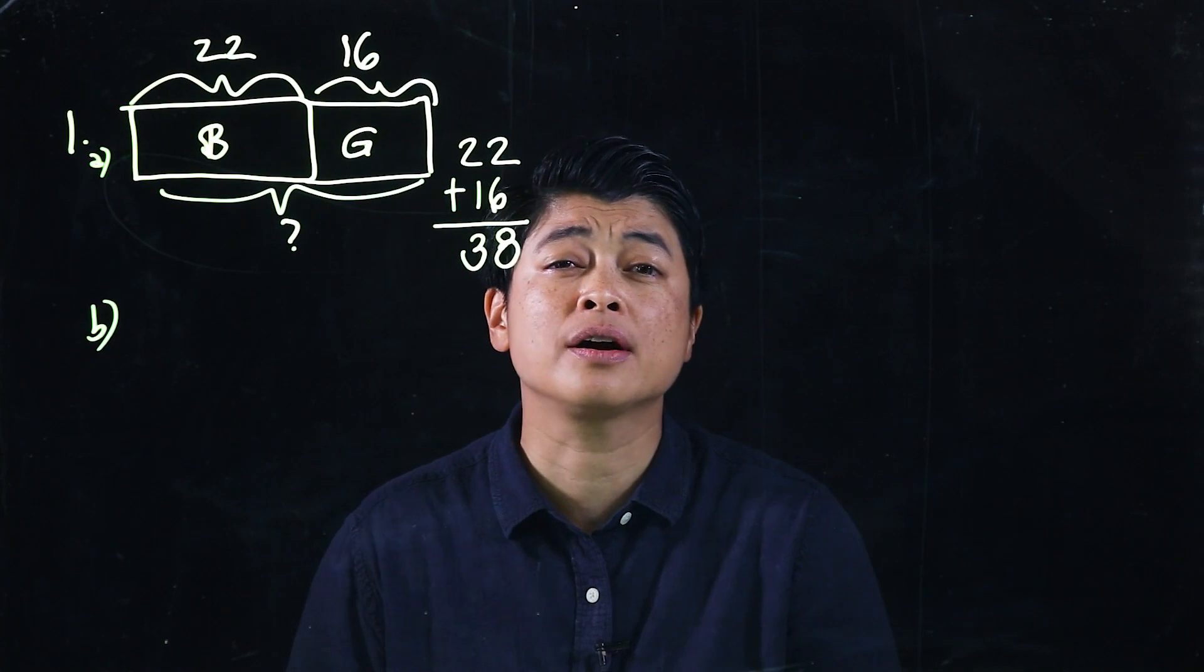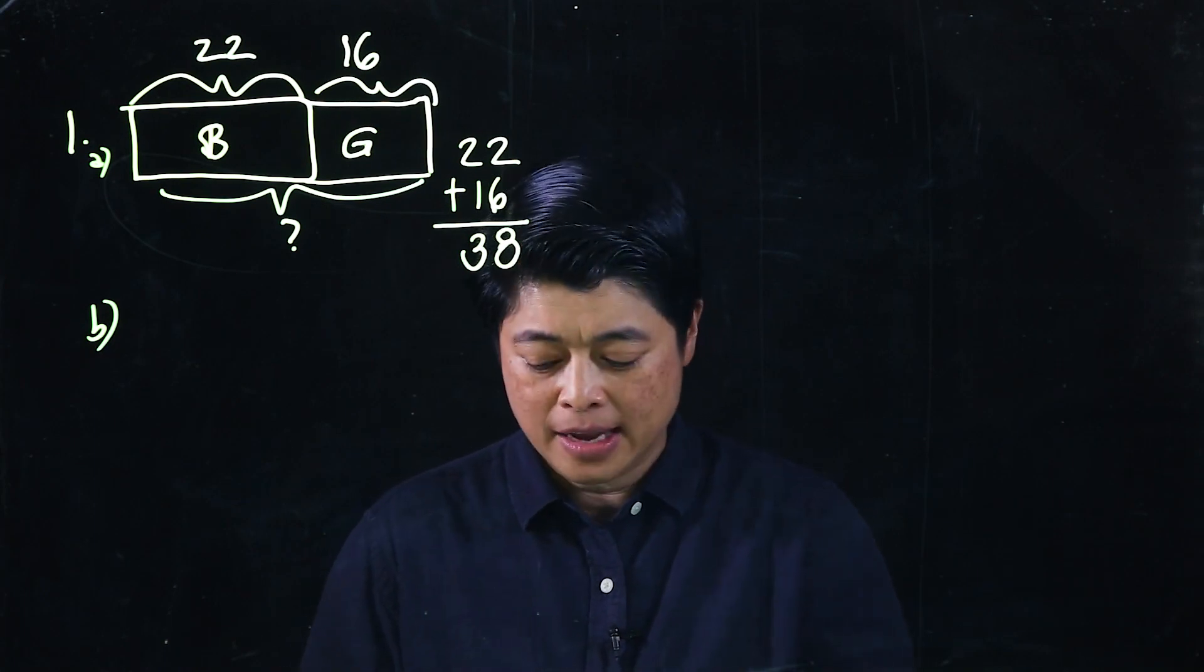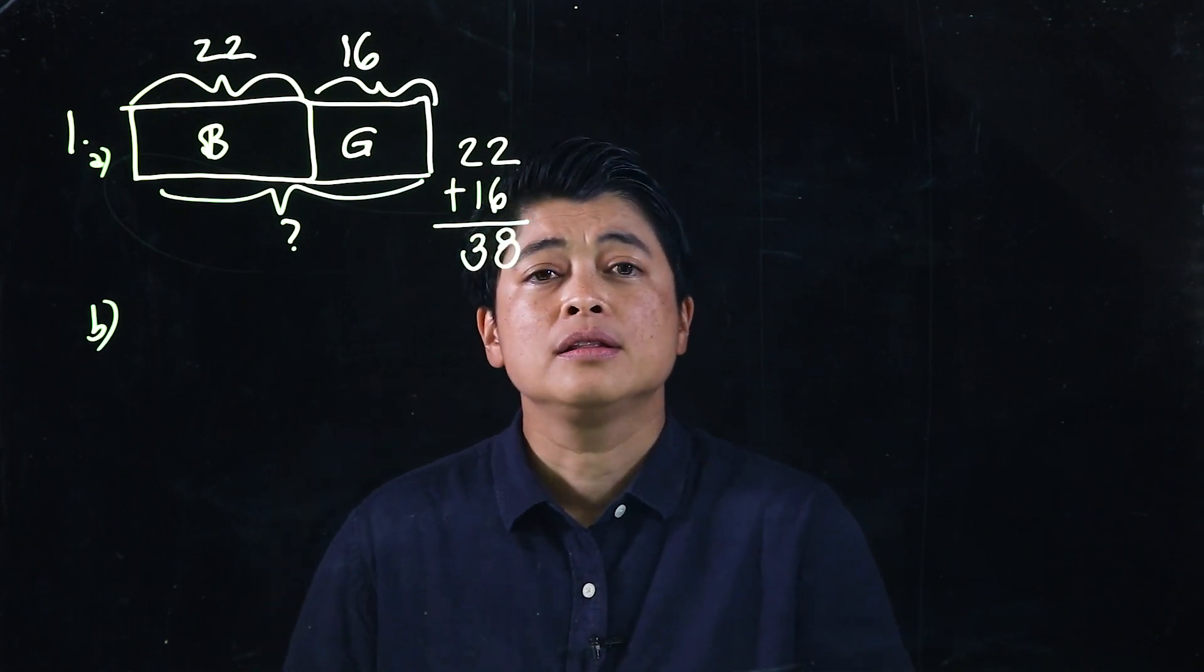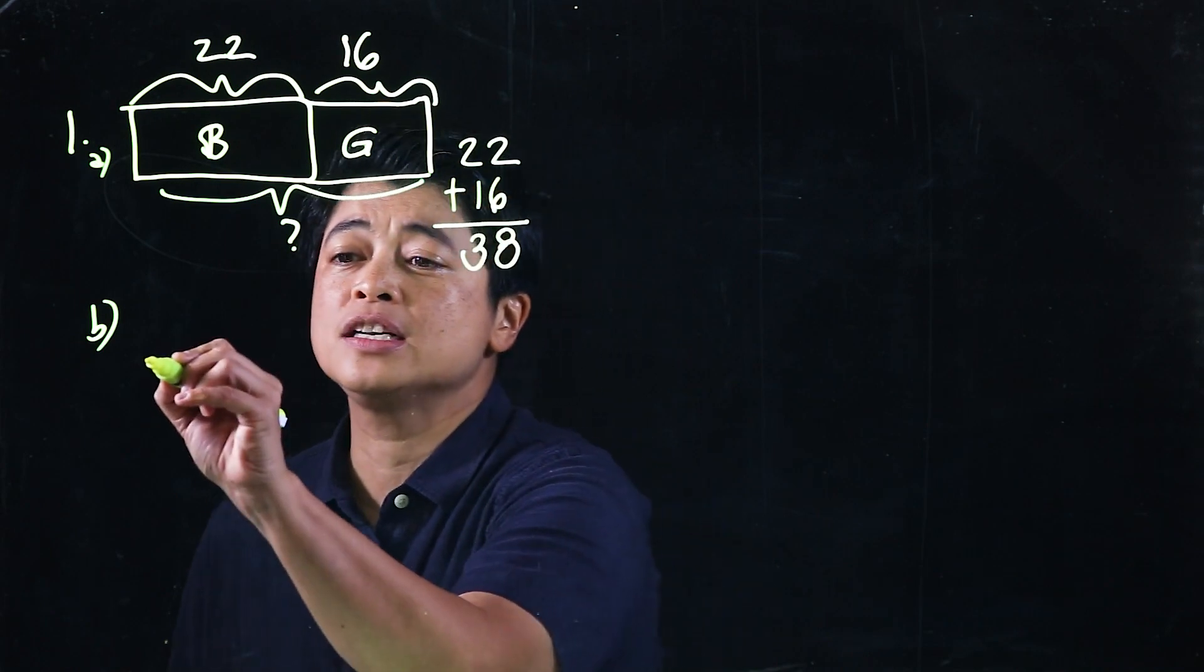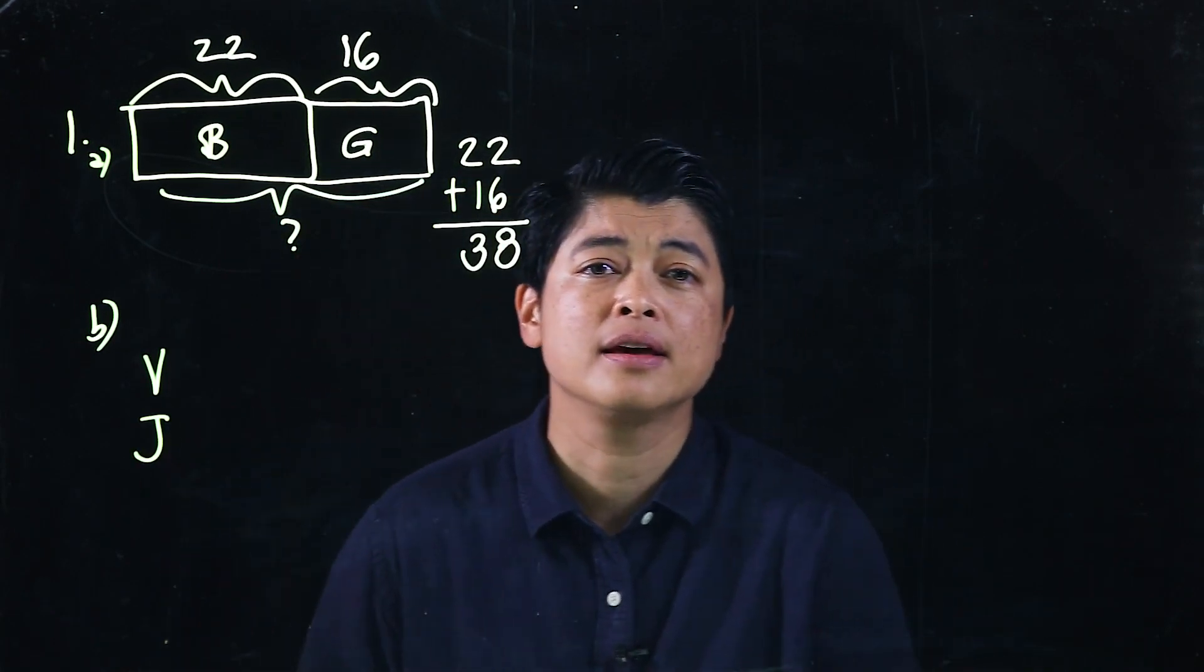However, there's a question B. Question B says how many children are there in Joshua's class. Now, the bar model that they gave gives Joshua on top of Vicky.